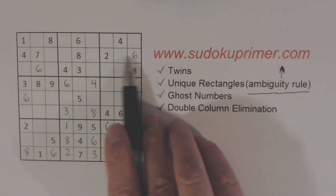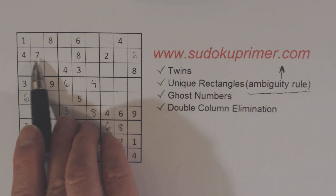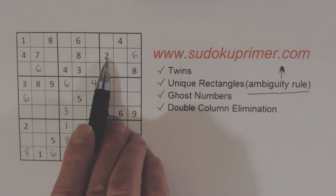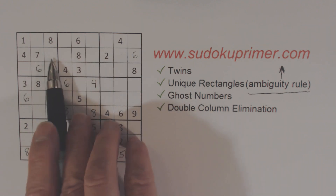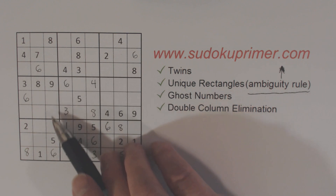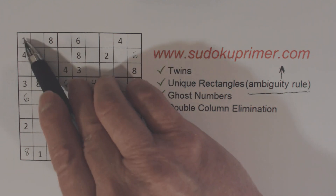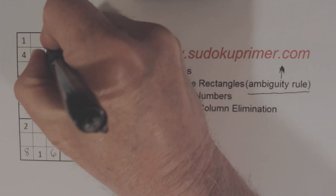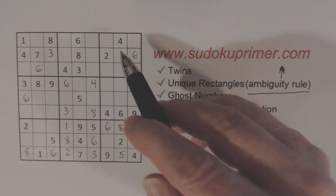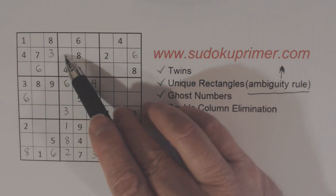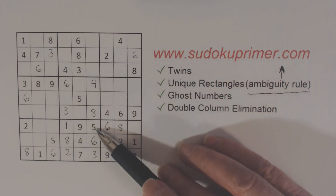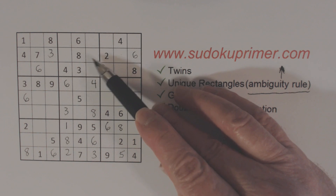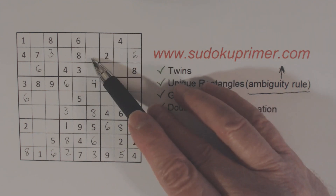Let's look at row two and see what we're missing there. It has one, three, five, six, seven, eight, nine — so we're missing one, three, five, and nine. Here's a five and a nine and a one, so that's a three. Now we're missing one, five, and nine. Here's a one — so five or nine. Here's a five — so one or nine. Here's another five — so one or nine. We have one-nine twins, so we know that remaining cell is a five.